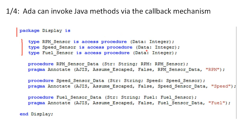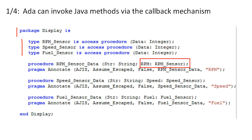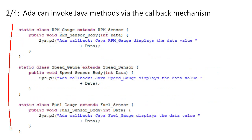The string parameter in each procedure enables Java to pass text information to ADA, for example a timestamp. The RPM parameter is a callback object implemented on the Java side. These are the sensor callback classes in which Java has implemented the ADA callback specification.